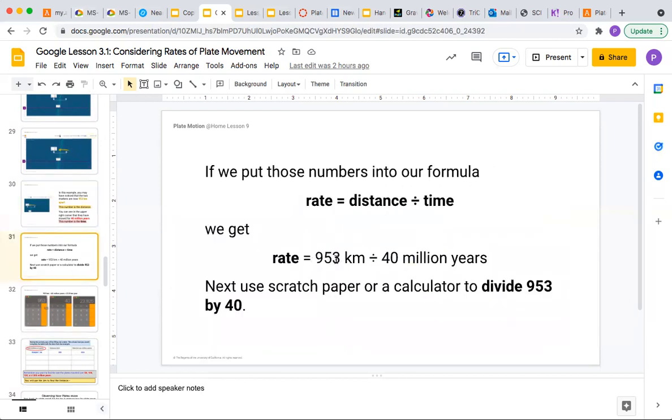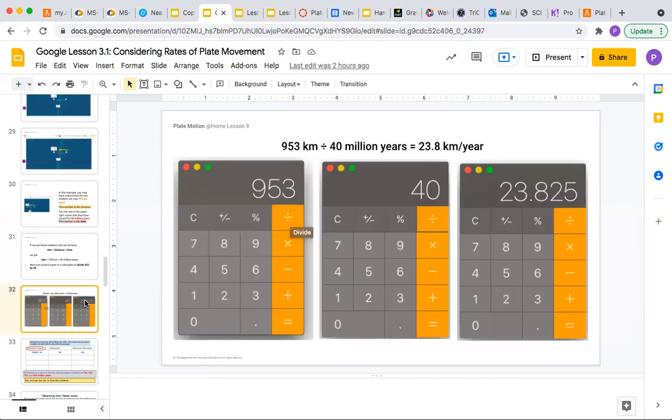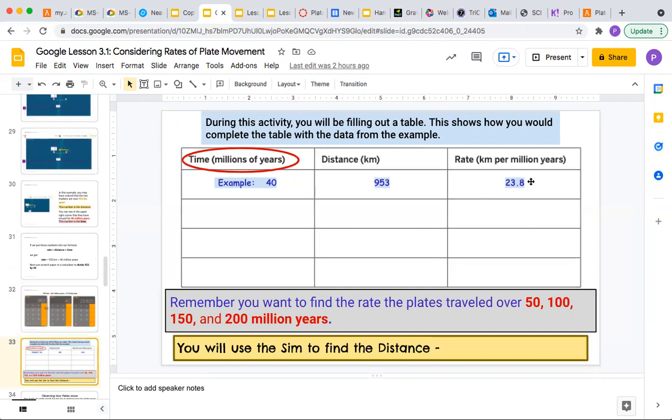It will be 953 kilometers divided by 40 million years. You can use a calculator or scratch paper to figure it out. So you do 953 divided by 40, and you're going to get 23.8 kilometers per year. That's what you would write over here, 23.8.